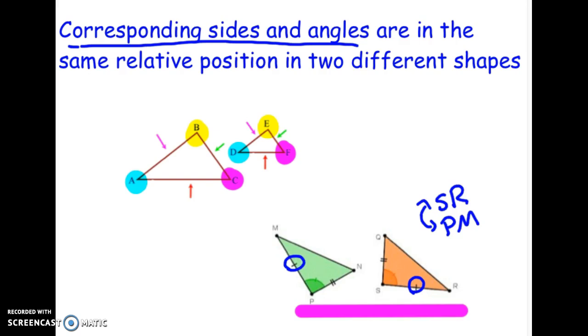You might also notice these angles have the same mark here. So angle P and angle S, and notice they're going to be congruent. Those are corresponding to each other. You could find a few more, but you have to be really careful if they're flipped or turned.